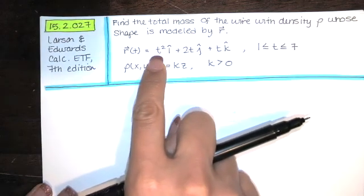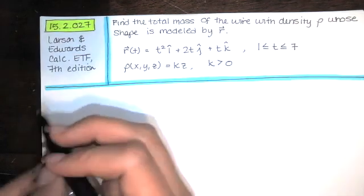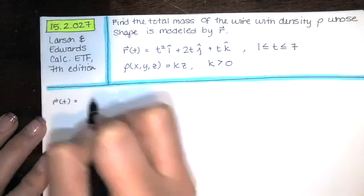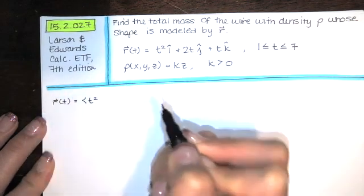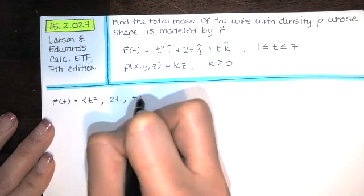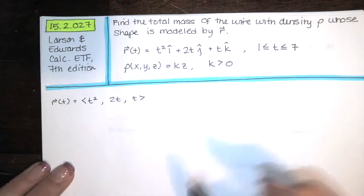So R is T squared times I hat plus 2T times J hat plus T times K hat. But personally, I would rather write that in component form. So that'll be T squared, 2T, T. Just list your X of T, Y of T, and Z of T right there.